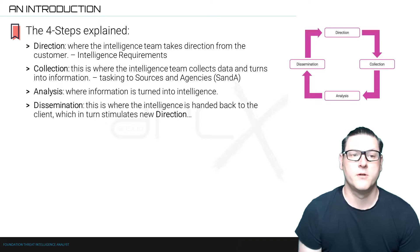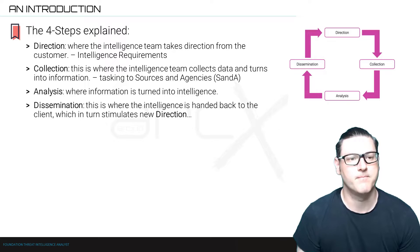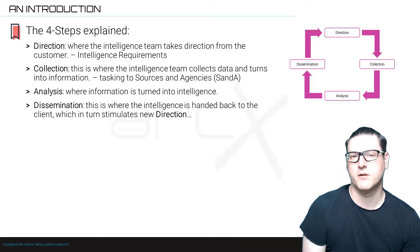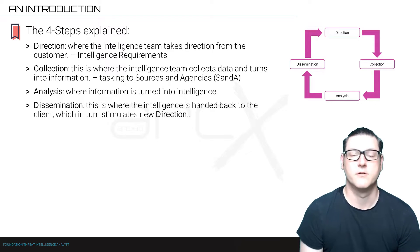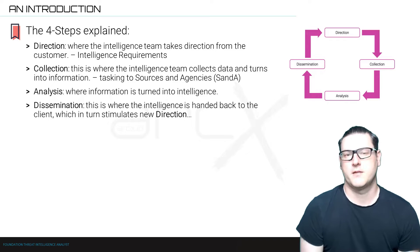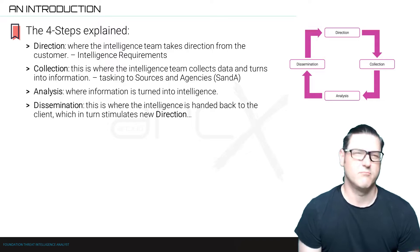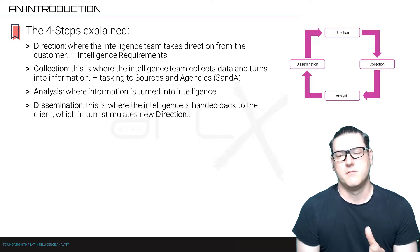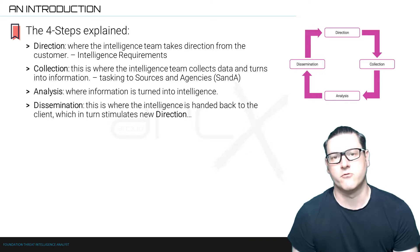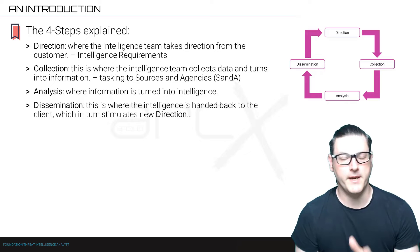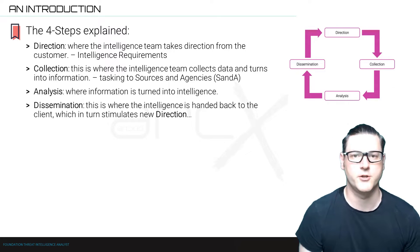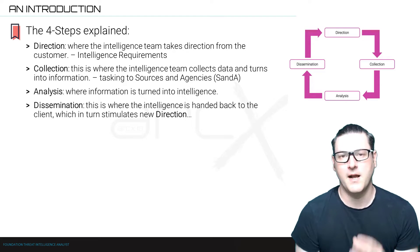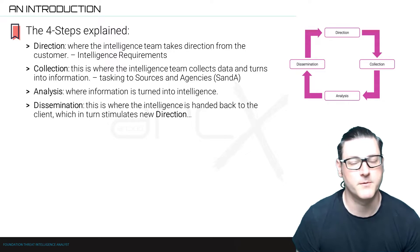Let's dig into these phases a little bit more, and I'm going to offer some definitions that you should learn. Direction — even though it's a cycle, this is usually where it's acknowledged that the cycle initiates. Direction is where the intelligence team takes direction from the customer — that's a fancy way of saying they get told what to do by the main stakeholder for their operation. This is more professionally described as intelligence requirements, or IRs. There's somebody out there who's not in the intelligence team, which is part of the wider organisation, who's giving the intelligence team a job to do, and those are codified inside what's known as intelligence requirements.